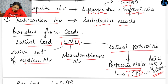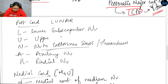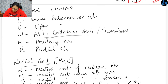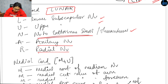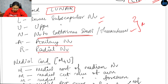Now let's see the branches of the posterior cord. From the posterior cord, we get axillary nerve and radial nerve as major branches, and three minor branches: upper subscapular nerve, lower subscapular nerve, and thoracodorsal nerve. The thoracodorsal nerve is also known as the nerve to latissimus dorsi. So we get three minor branches and two major nerves from the posterior cord.